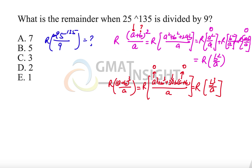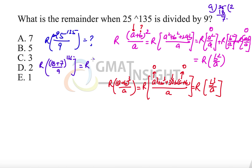Applying this to our problem: when 25 is divided by 9, we see that 18 is divisible by 9 (9 × 2 = 18), leaving 7. So we rewrite the question as the remainder when (18 + 7)^135 is divided by 9. This becomes the same as the remainder when 7^135 is divided by 9, because any part of the numerator divisible by the denominator is redundant for finding the remainder.